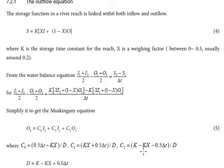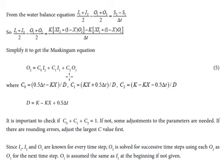And the constants C0, C1, and C2 are given by: C0 is given by 0.5 times the time interval minus K times X, divided by the denominator delta t.